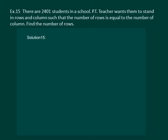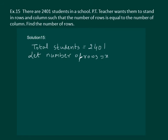So in the question we are given that total students is equal to 2401. Let us assume that the number of rows is equal to x. Then number of columns will also be equal to x.